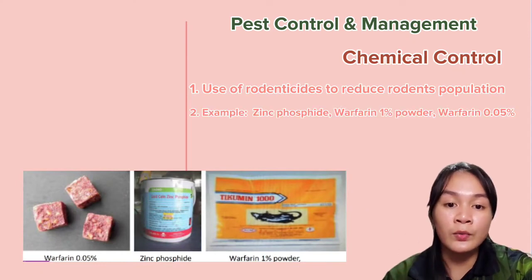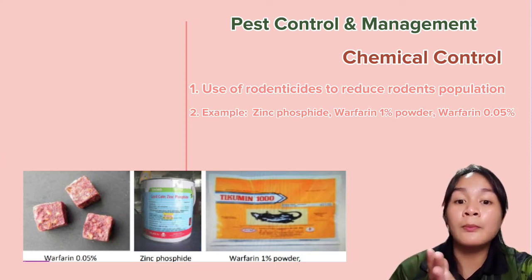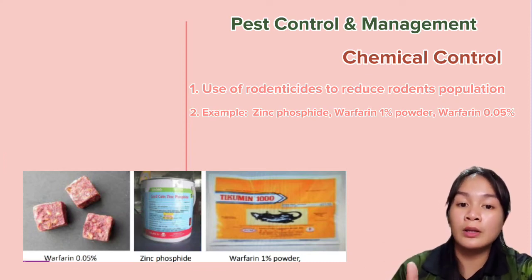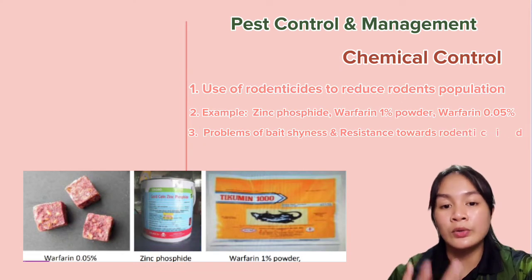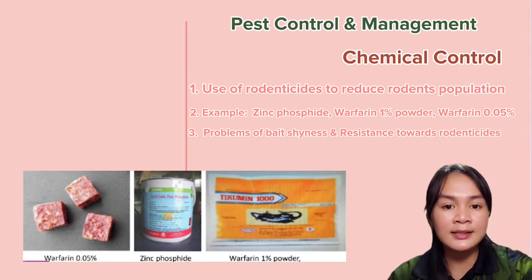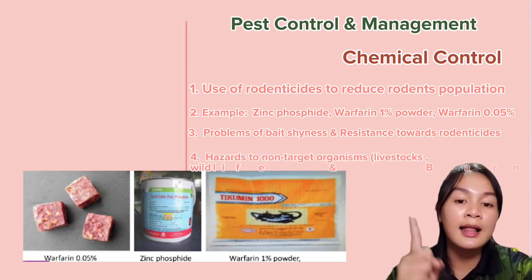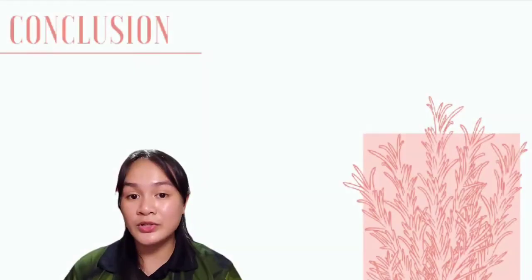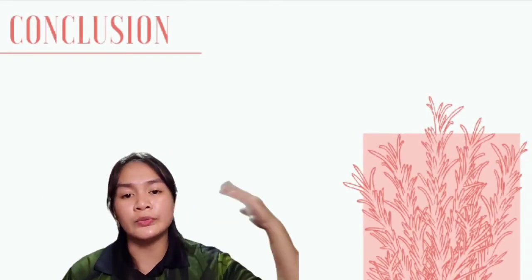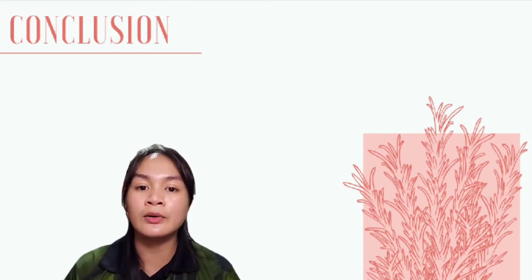The last method of control and management of rodent pests is using rodenticides to reduce the rodent population — for example, zinc phosphide at 1 percent powder, or warfarin at 0.05 percent. However, it should be noted that rodents have the problem of bait shyness and resistance toward rodenticides, and rodenticides are a hazard to non-target organisms such as livestock, wildlife, and farm animals.